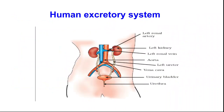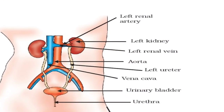The human excretory system consists of a pair of kidneys, a pair of ureters, a urinary bladder and urethra. The structural and functional unit of the kidney is the nephron. The blood vessels associated with the excretory system are the renal artery, renal vein, aorta and vena cava.